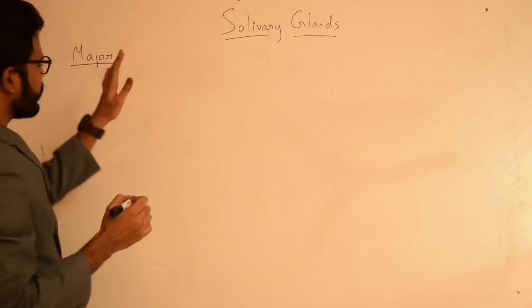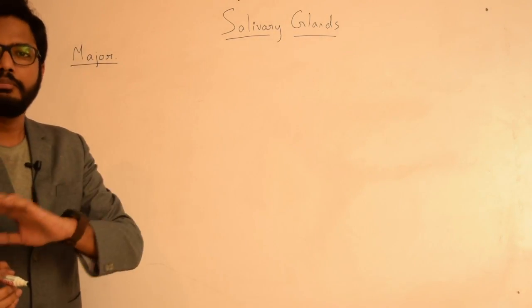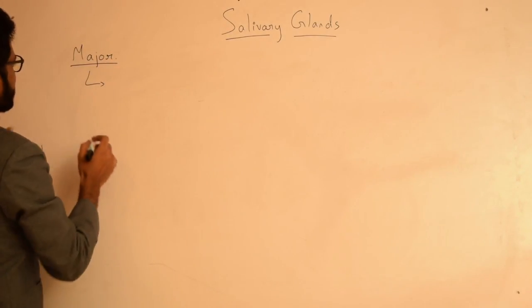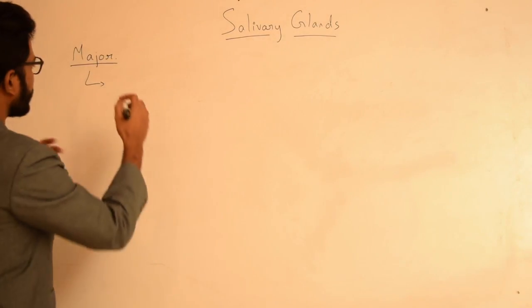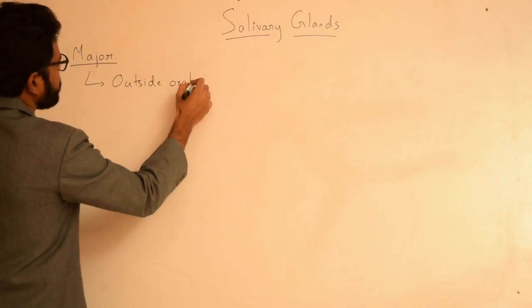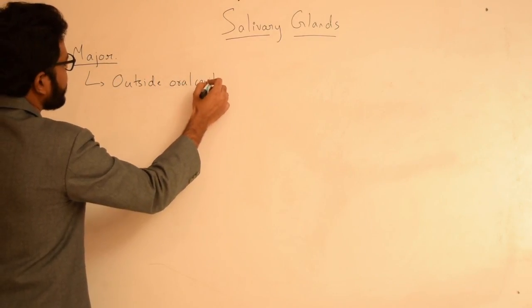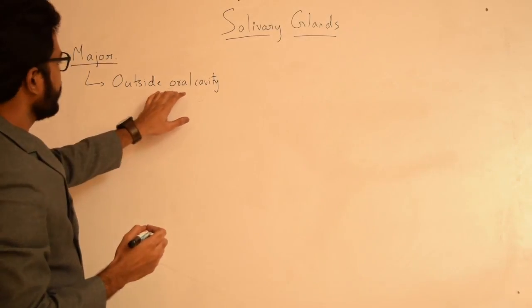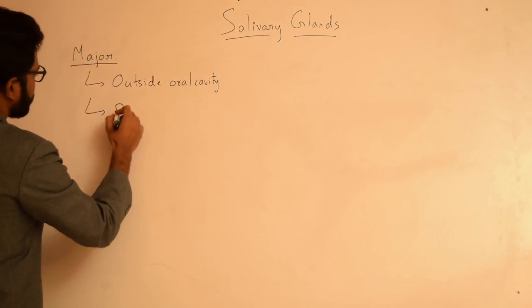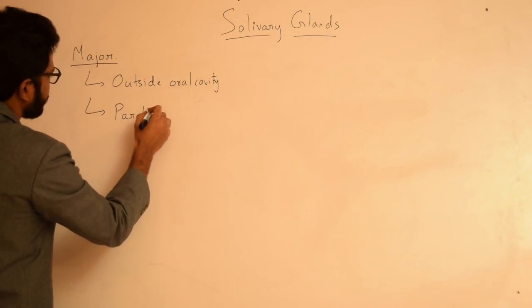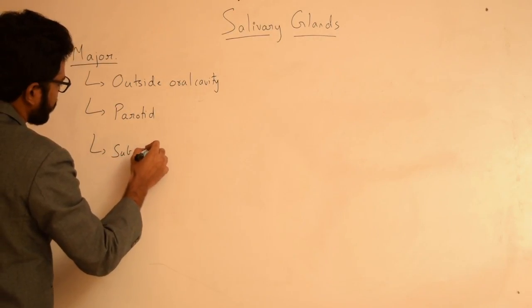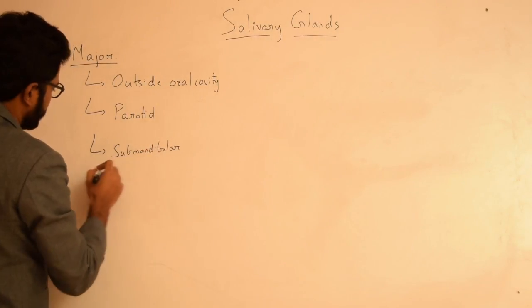We have three major salivary glands which are present bilaterally, so in total we have six major salivary glands. These major salivary glands are usually present outside the oral cavity, and their secretions or fluids reach the oral cavity via certain long ducts. The three major salivary glands include parotid gland, submandibular gland, and sublingual gland.